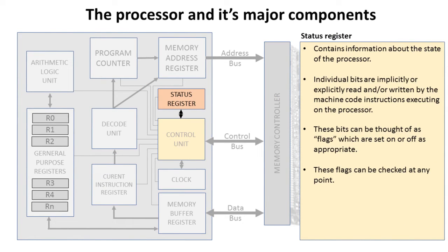The status register contains information about the state of the processor. Individual bits are implicitly or explicitly read or written to, and they are set on or off inside the processor. You can think of these bits as flags which can be checked at any point to determine certain statuses.